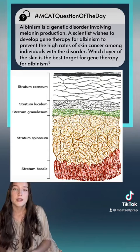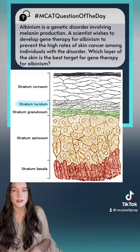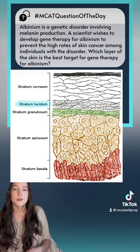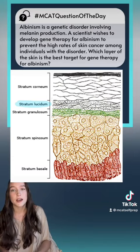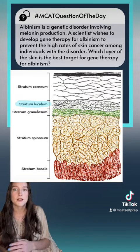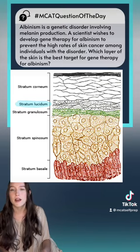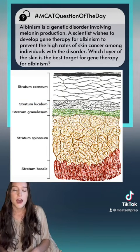Then, as the cells move from the bottom layers toward the top, they reach the stratum lucidium. This one is named because the cells in this layer are clear. They've worked so hard in the past three layers that they actually start to die off — they lose their nuclei, organelles, and granules, becoming a clear color because those organelles are no longer present to give them color.